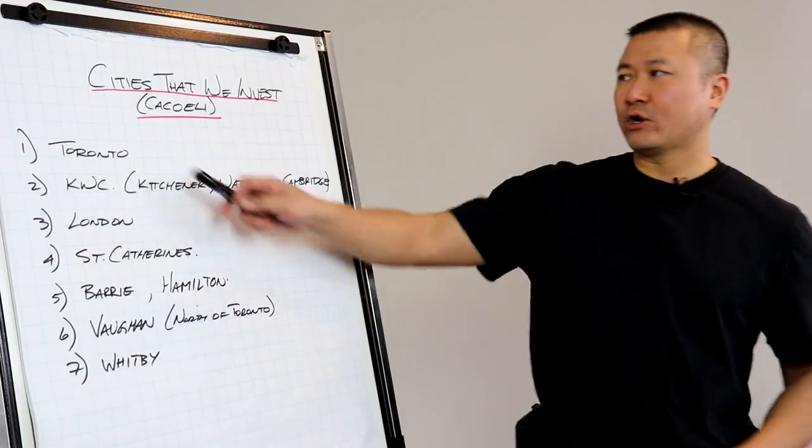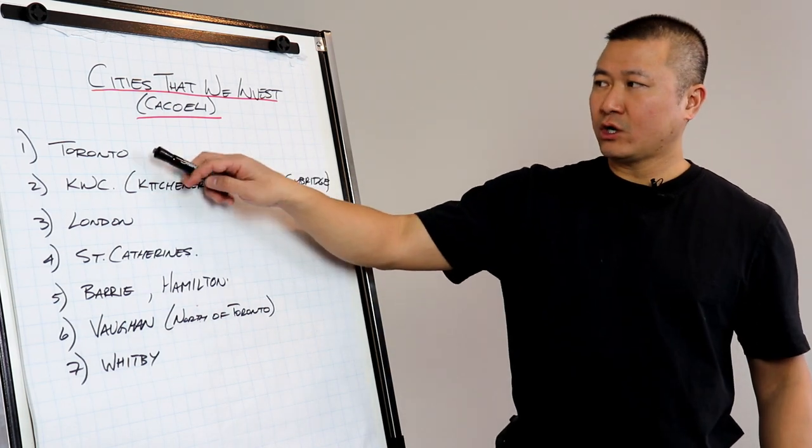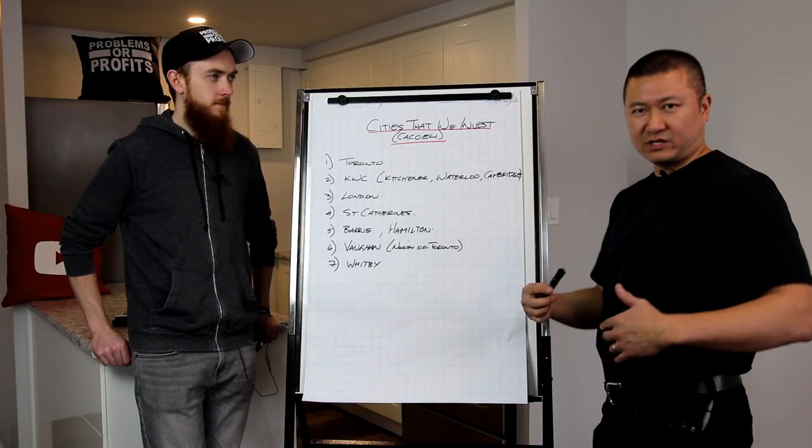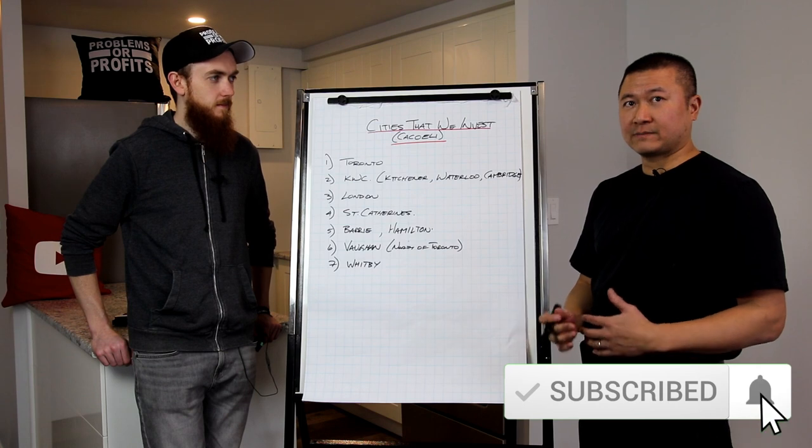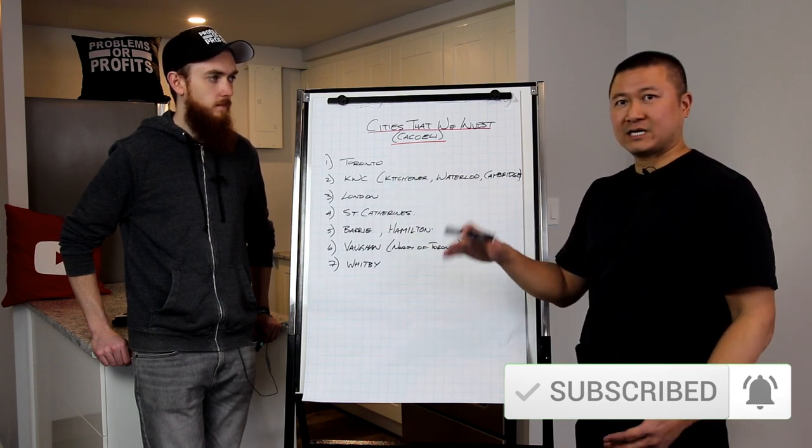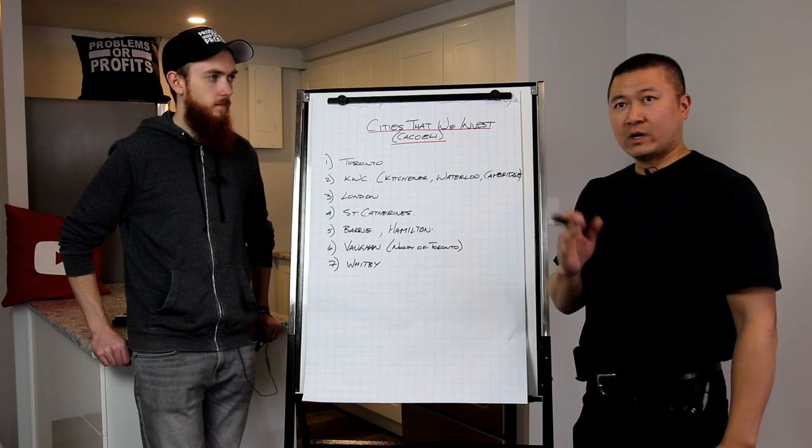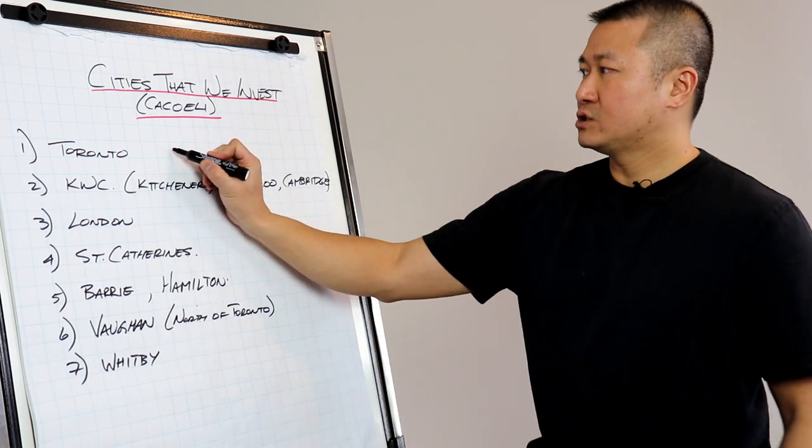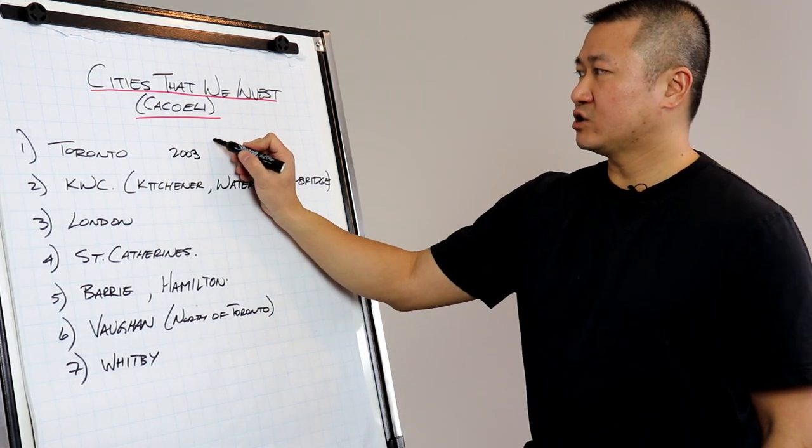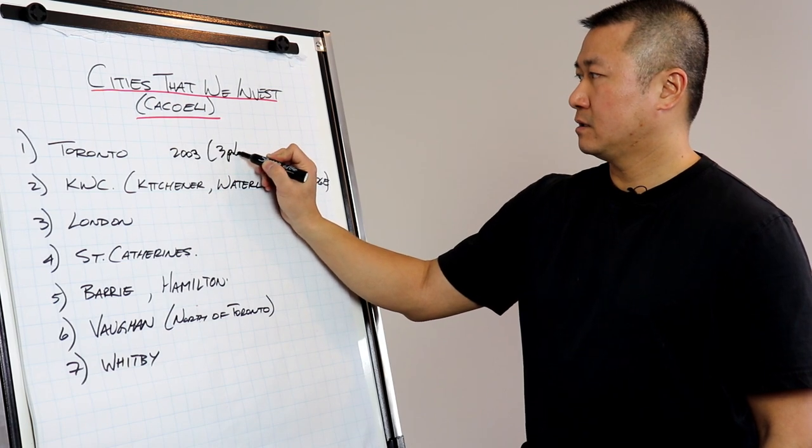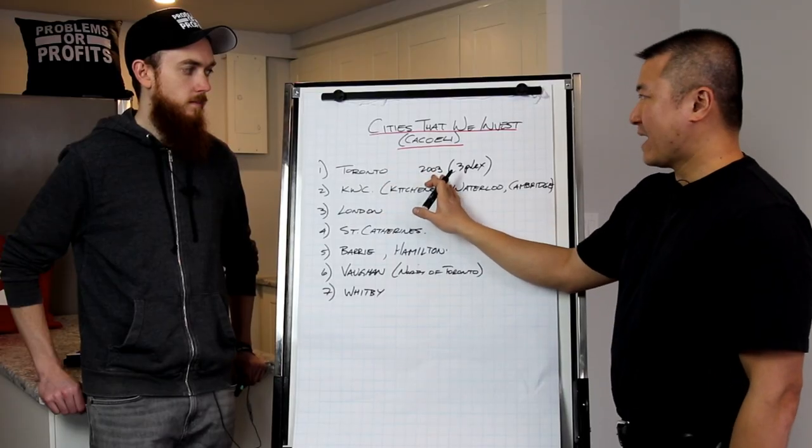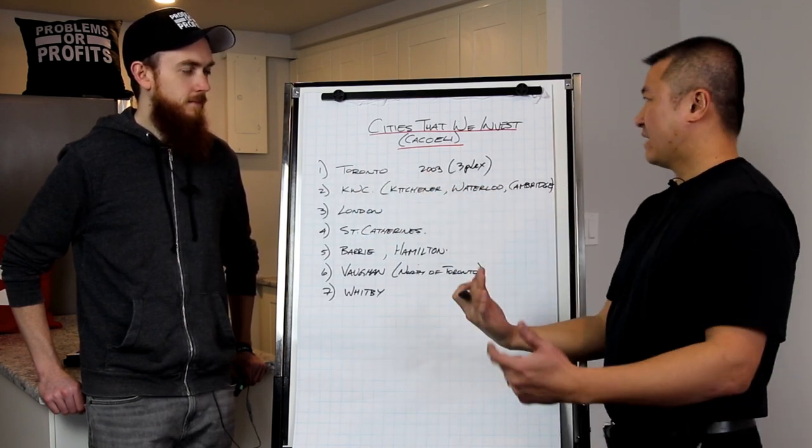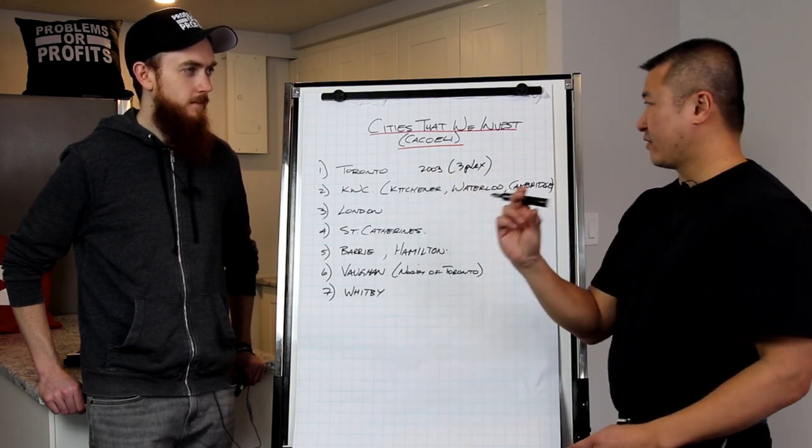So way back, this is Toronto. We started back in 2003. Toronto was a very viable location that we could invest in the triplex, the duplex, triplex, that's what I was looking for. Something that's affordable. In 2003, we bought that triplex downtown Toronto, Dundas and Broadview, for $197,500. So Toronto was doable back then in 2003. This is a triplex, a three-plex.